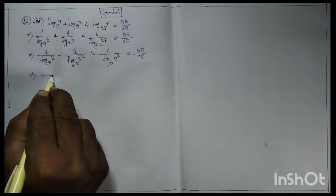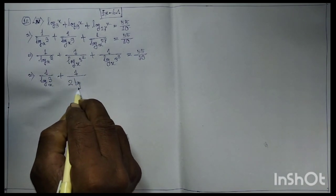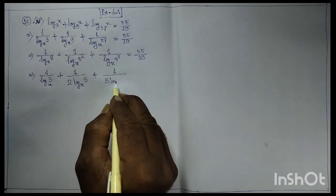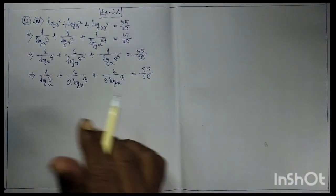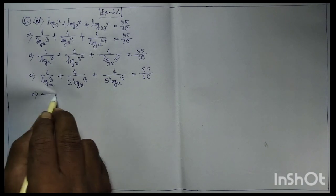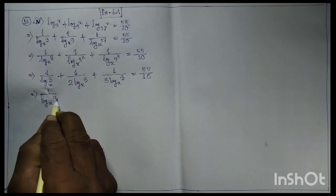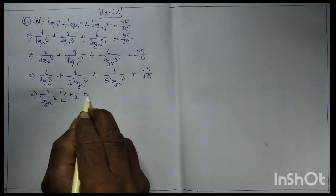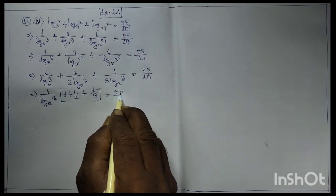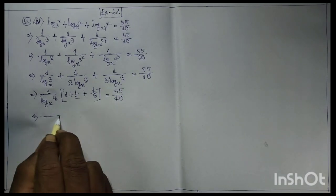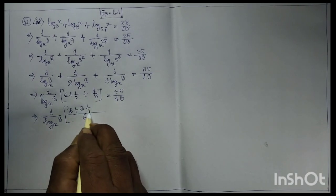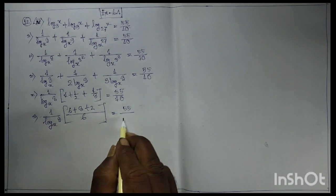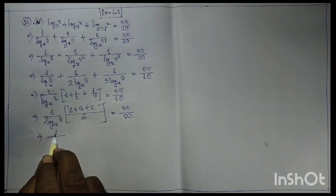Expanding: 1 by log(3wx) plus 1 by twice log(3wx) plus 1 by three times log(3wx). Taking log(3wx) common: 1 plus half plus 1 by 3 equals 55 by 10. This gives 1 by log(3wx) multiplied by 36 plus 3 plus 2, equals 55 by 10.